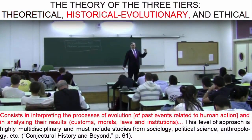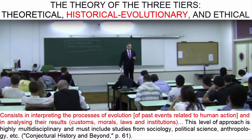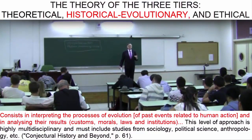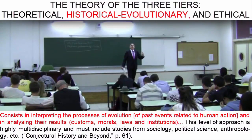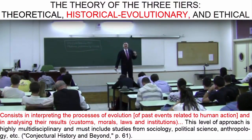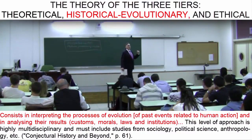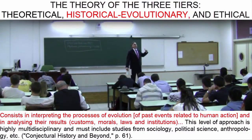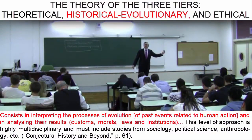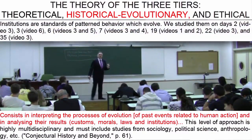Second, there is the historical or evolutionary level, which consists of the study of how past events have unfolded with respect to human action and interaction. In short, human interaction is embodied in historical events over the different generations. And that unfolding of history also guides us and tells us which behaviors are coherent, which are successful and which are not.